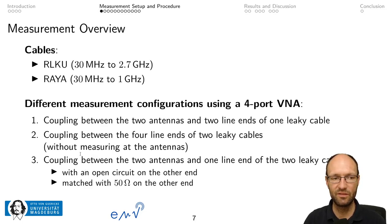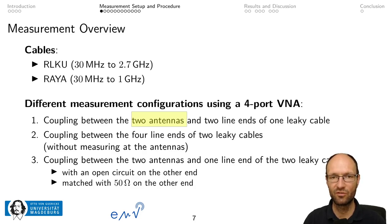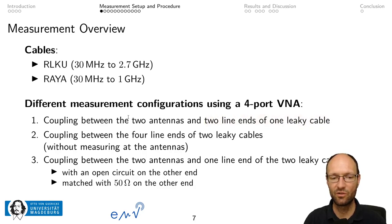Looking at the measurement setup: we measured two different types of cables. They are called RLKU, which works from 30 MHz up to 2.7 GHz, and a second cable called RAIA, which has a slightly smaller frequency range. We did the measurements with a four-port vector network analyzer. With four ports, two already used for the two antennas, the remaining two ports are available for a cable — so you can measure the scattering between the two antennas and the two ends of one cable. We did this for both the first and second cable.